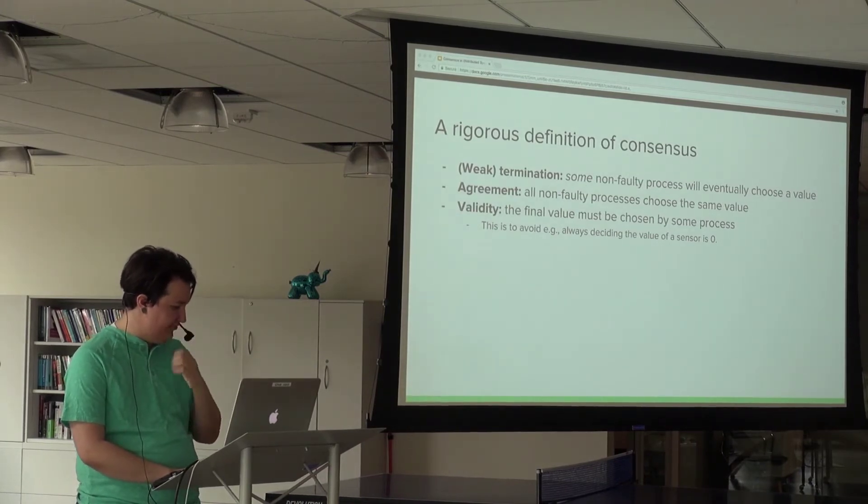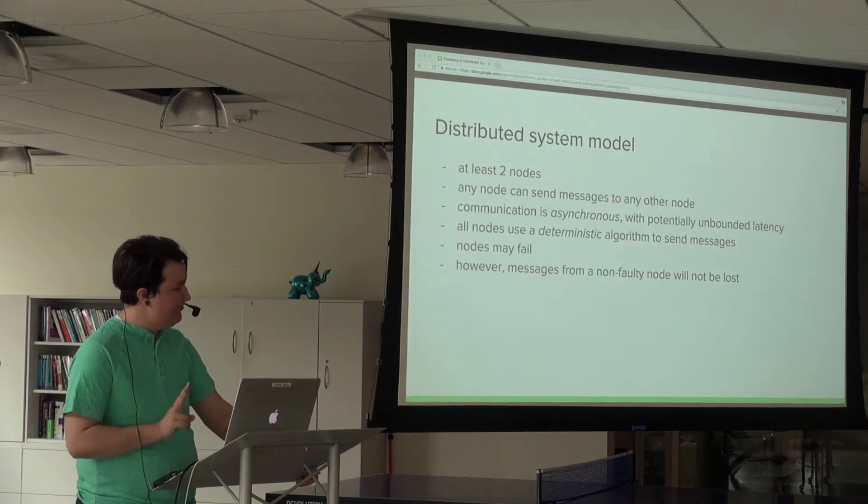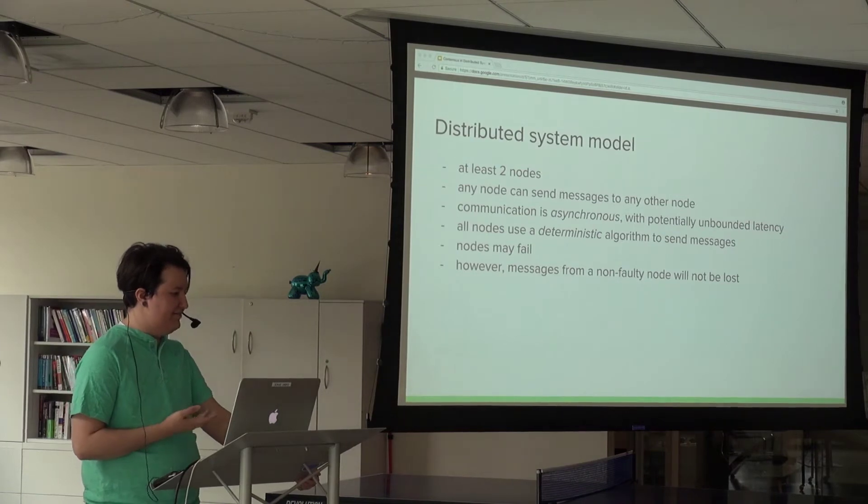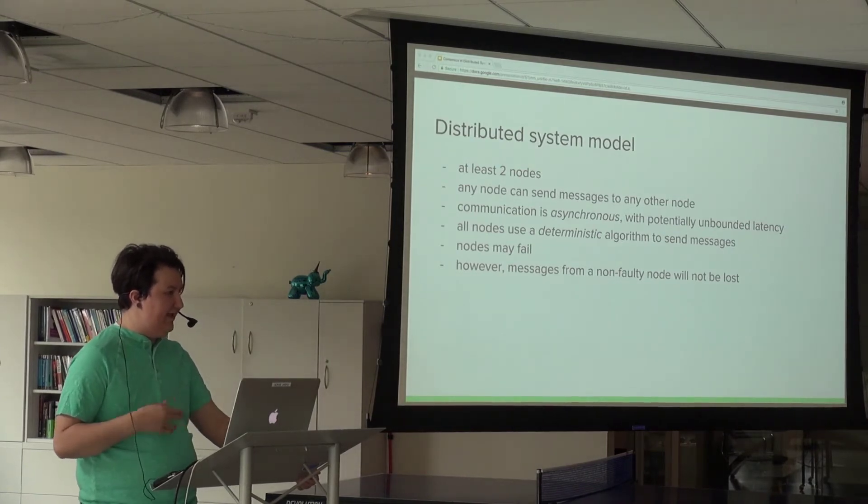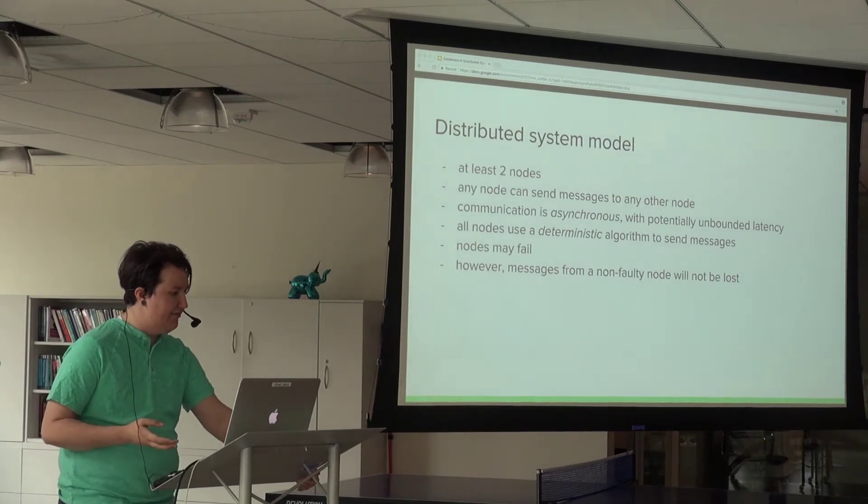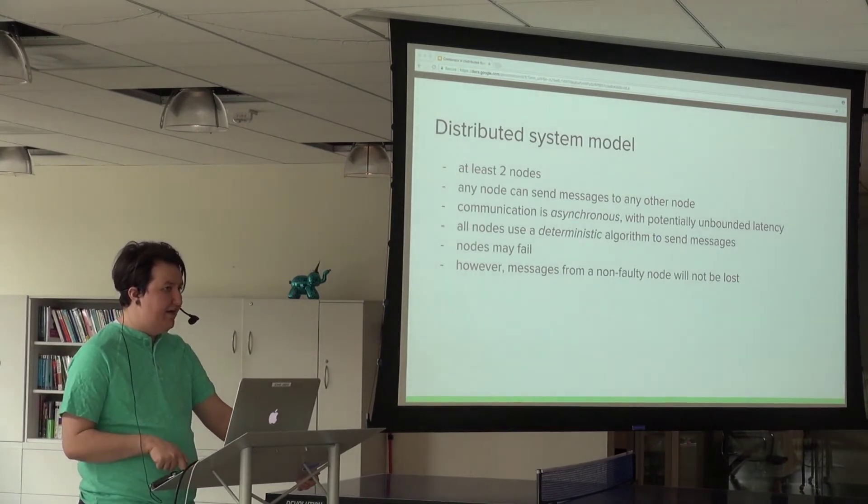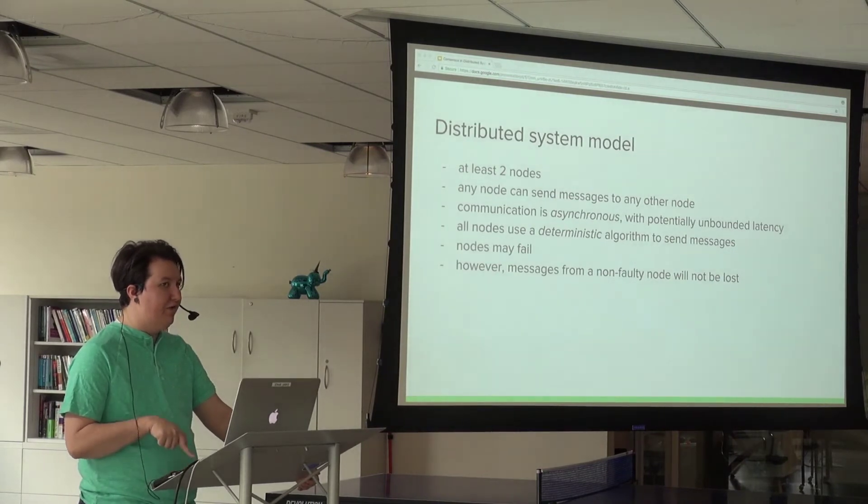Our distributed model has at least two nodes. Any node can send messages to any other node. Asynchronous communication latency is potentially unbounded. All nodes use a deterministic algorithm to send messages. Nodes can fail, but messages from a healthy node will always eventually reach their target. That's the important part.